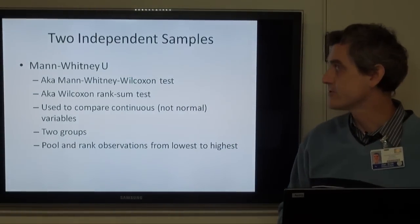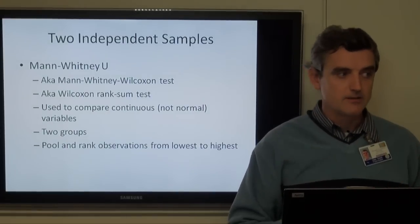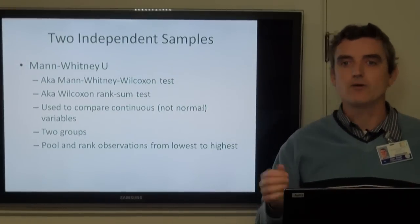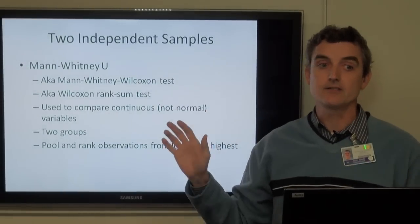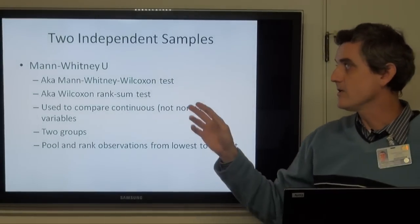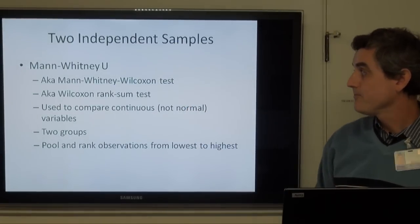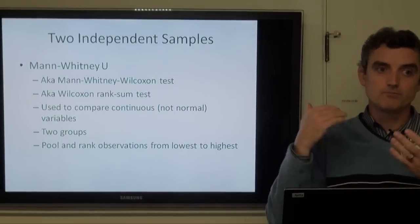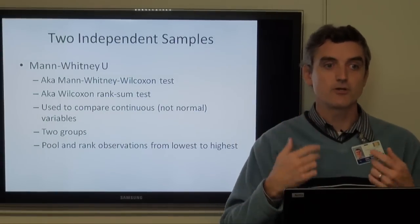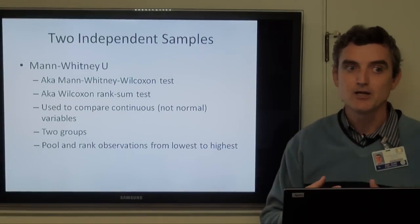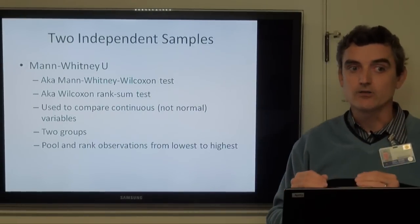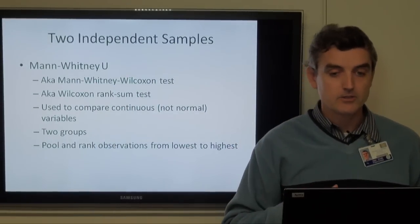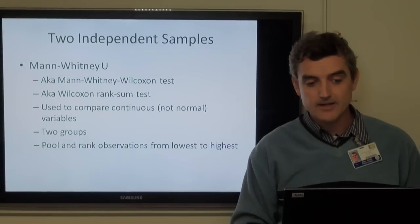That was for a categorical outcome where we have an expected value less than five — that's the Fisher's Exact test. If we have two independent samples and a continuous or ordinal outcome, we're going to use the Mann-Whitney U. The title isn't necessarily descriptive; it's also called the Mann-Whitney-Wilcoxon test. I actually prefer the name Wilcoxon Rank Sum test because 'rank sum' describes exactly what it does — you rank all your observations, put them in order, and add all those ranks up.